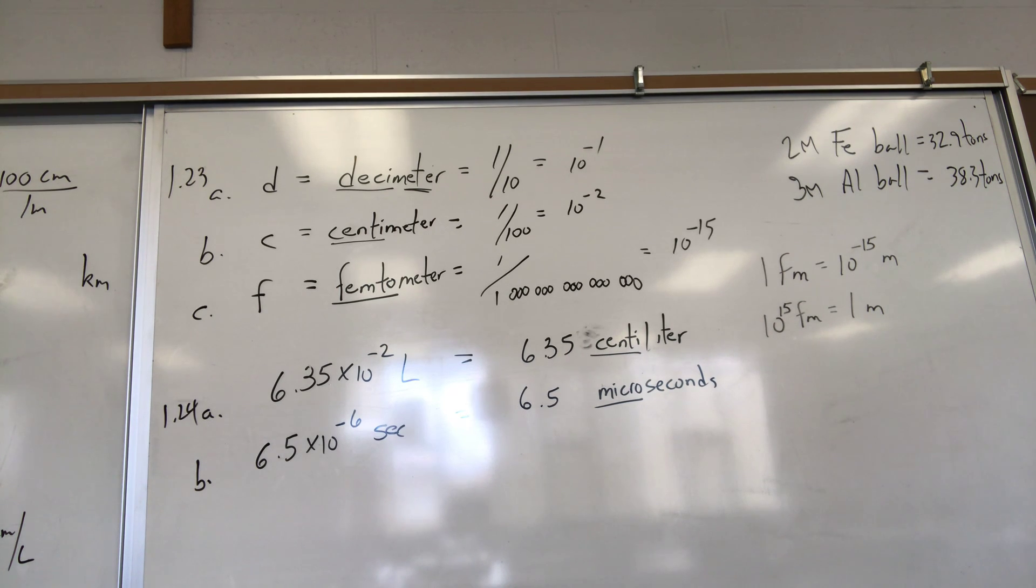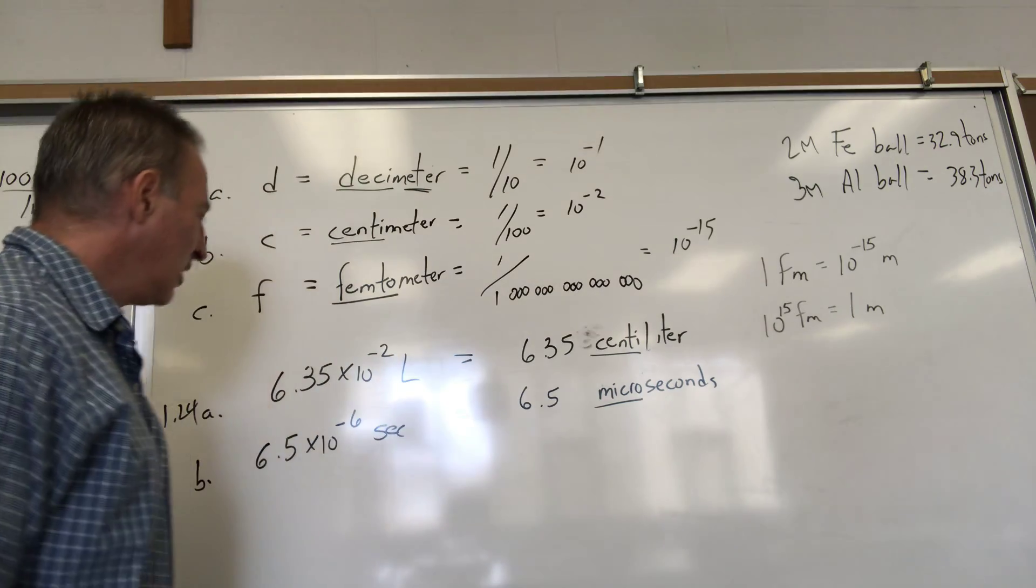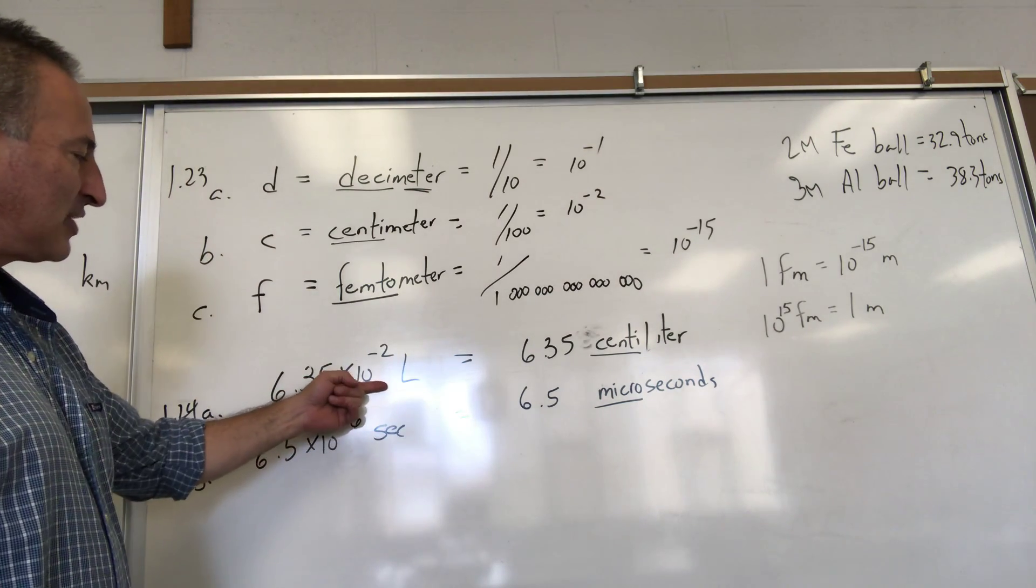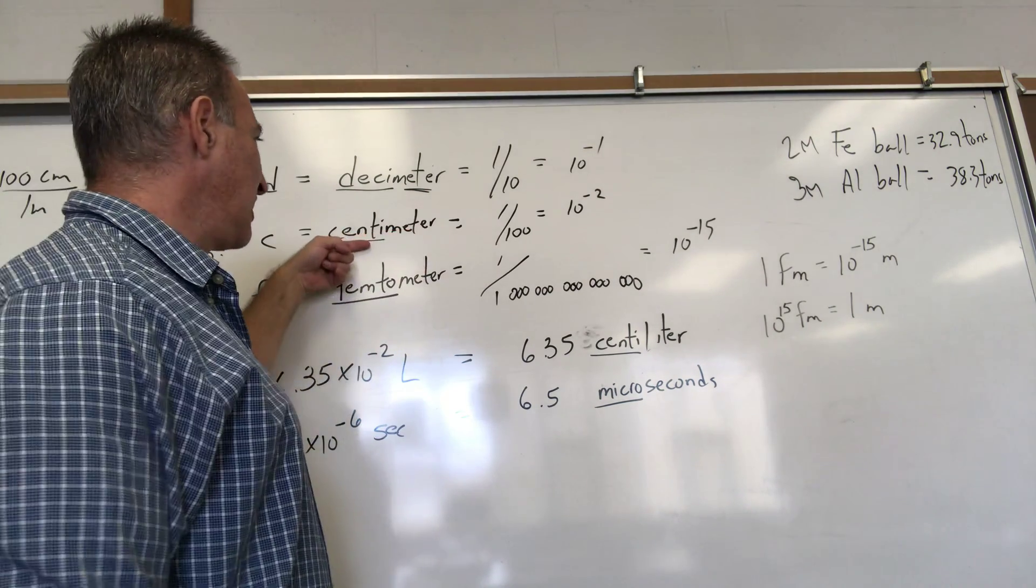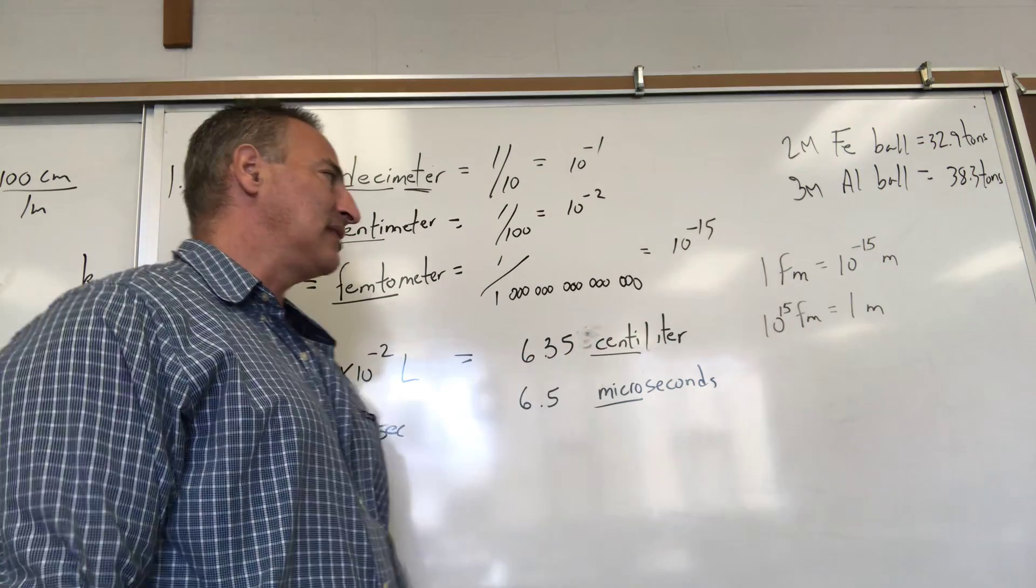On 124, use the appropriate metric prefixes to write the following measurements. For 124, the example is 6.35 times 10 to the minus 2. 10 to the minus 2 we just did—it's centi, it's 1/100, so you could say 6.35 centiliter.